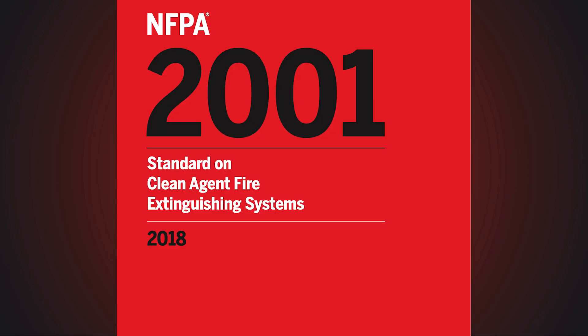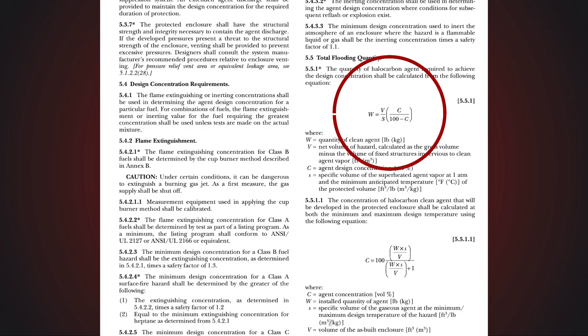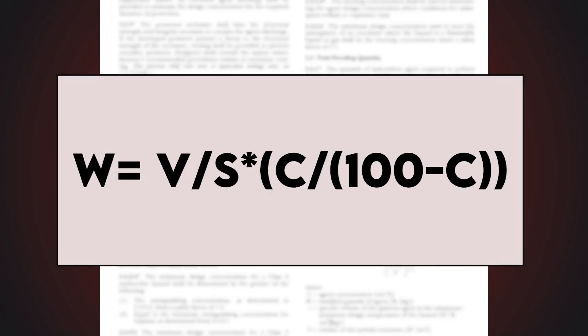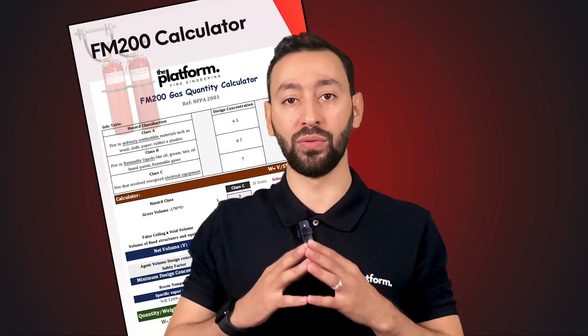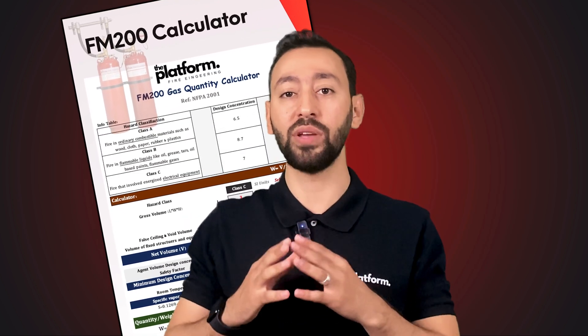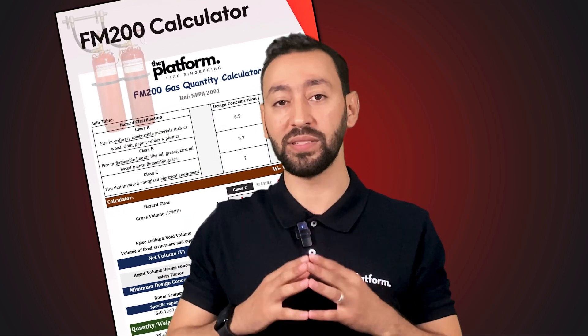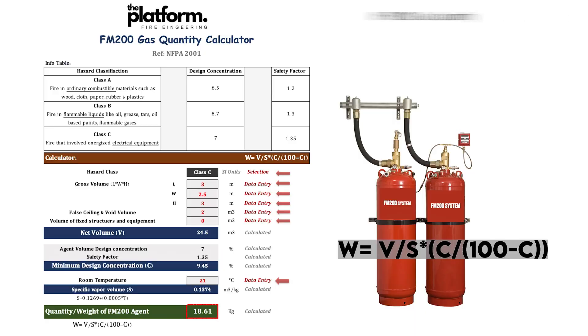Referring to NFPA 2001 standard, the required quantity of FM 200 gas is calculated using an equation which my calculator is designed based on. This equation includes variables that can be calculated as follows.